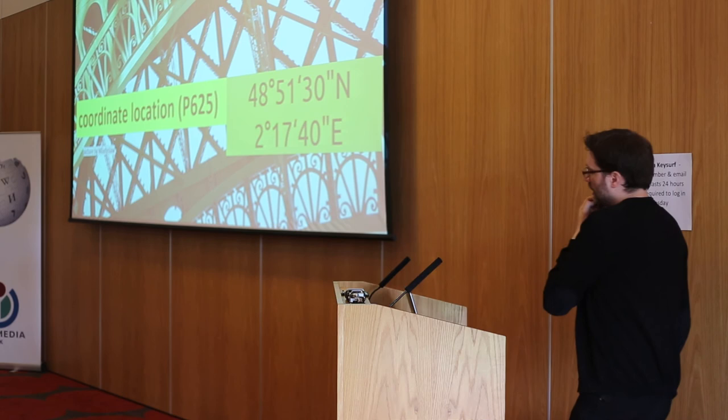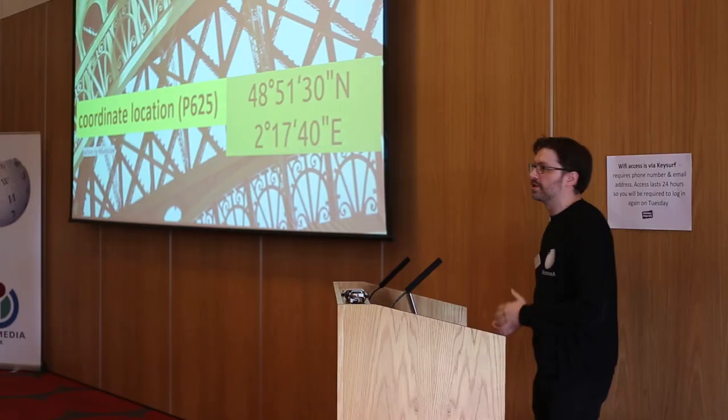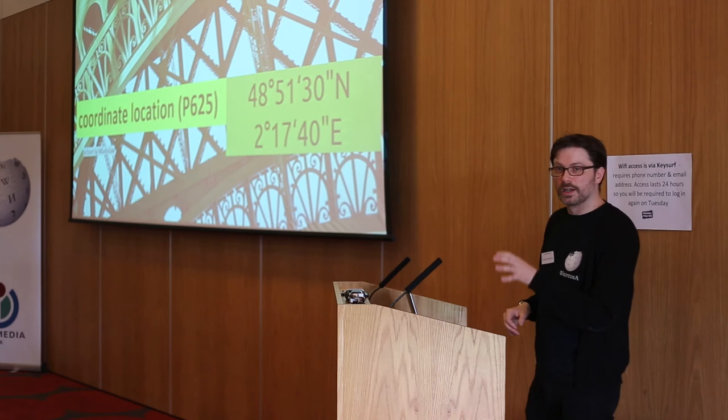The Eiffel Tower, item Q243, has a property P625 'coordinate location' with the geographic coordinates of the Eiffel Tower input. There's any number of different information you could input into Wikidata.